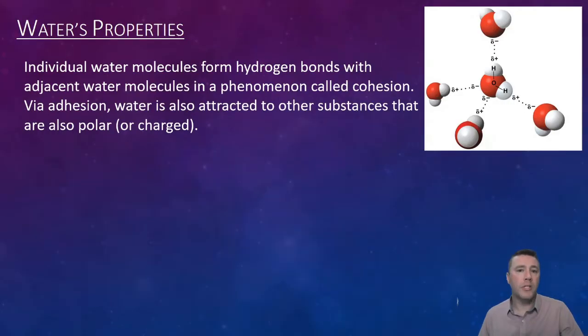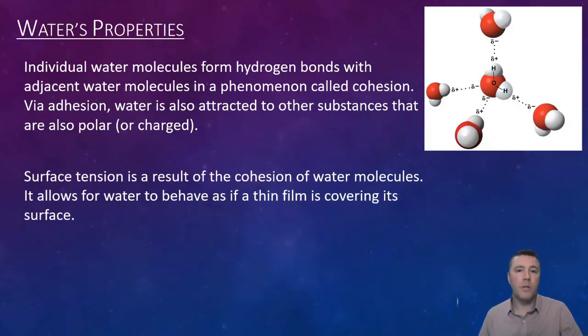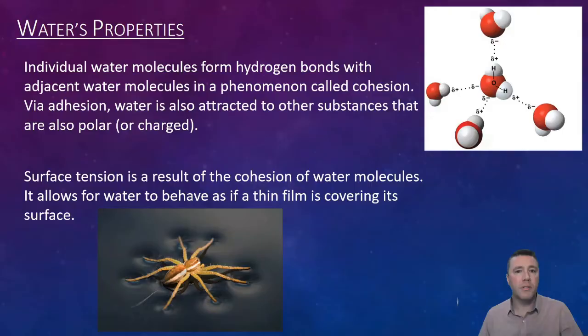Within the transport vessels of a plant, long chains of water molecules stretch up through the height of the stem or trunk. They stick to the inside walls of the xylem and to one another, allowing for water to be pulled up through the plant from soil to stem to branch to leaf, ultimately into the atmosphere. Additionally, because of cohesion, water behaves as if a film covers its surface in a phenomenon called surface tension.